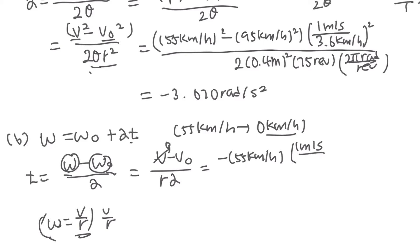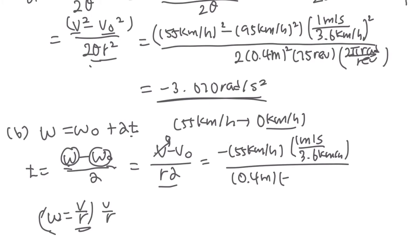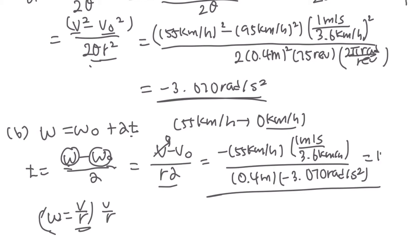We convert the units by multiplying by 1 meter per second over 3.6 km per hour. The radius is 0.4 meters, and alpha is the value computed in Part A. Putting these values into the calculator gives the answer as 12.44 seconds, which rounds to approximately 12 seconds.